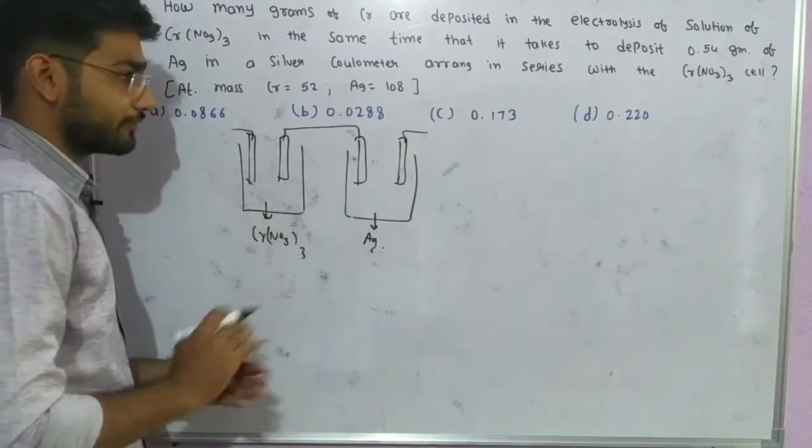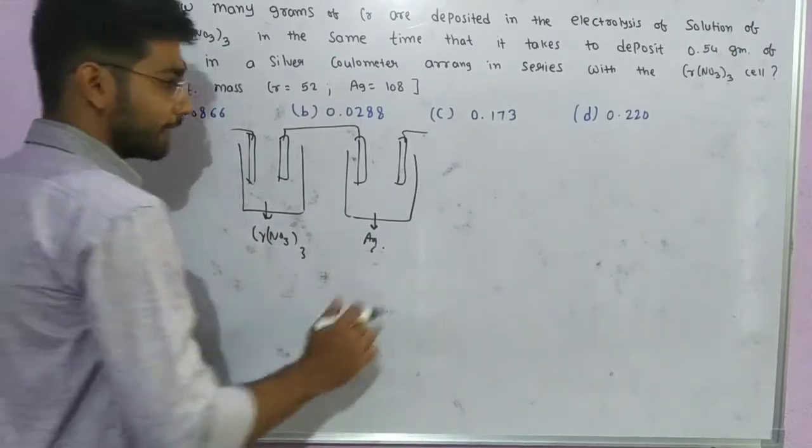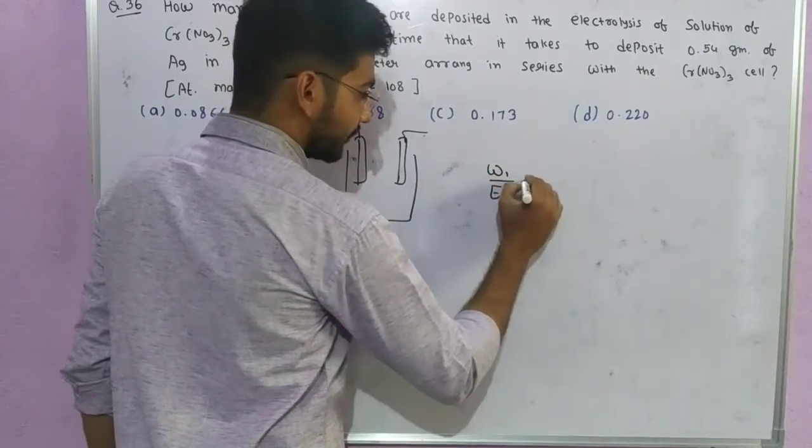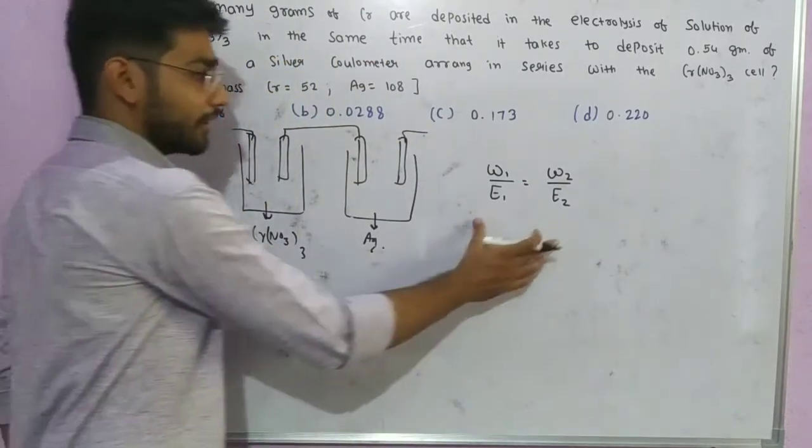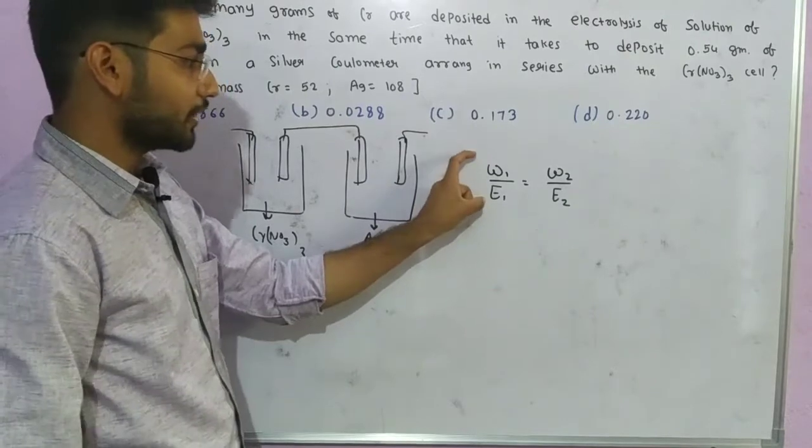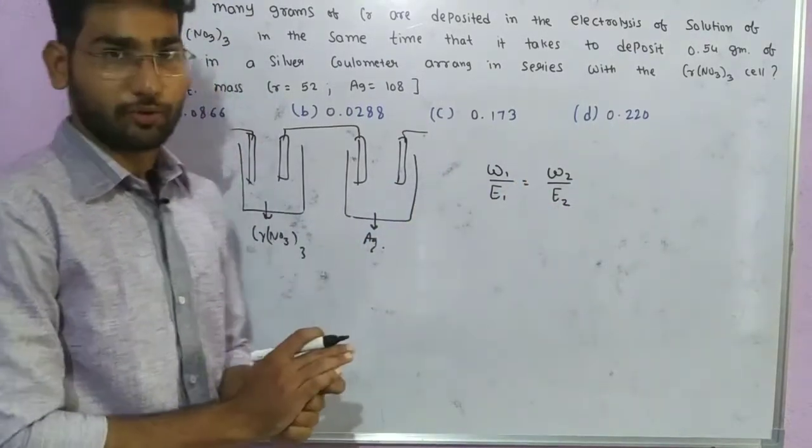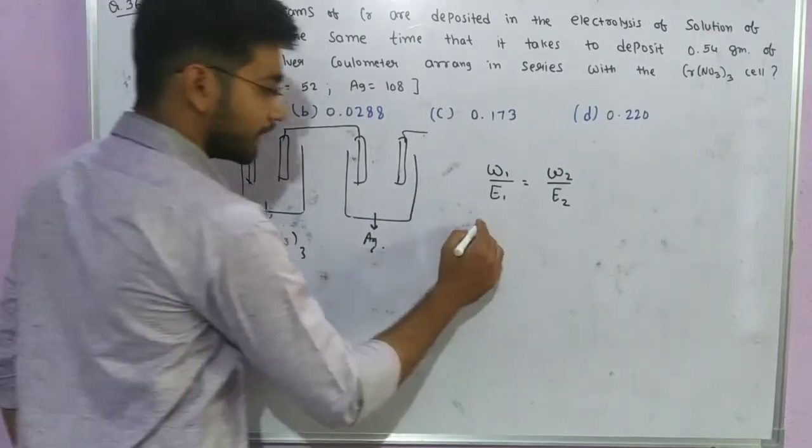For Faraday's second law, we can directly apply the formula: weight of first substance divided by equivalent weight of first equals weight of second substance divided by equivalent weight of second. So we write: weight of chromium over equivalent weight of chromium equals weight of silver over equivalent weight of silver. Now let's calculate.